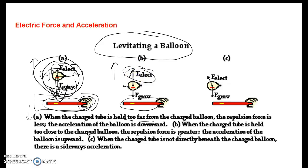When the tube is held off to the corner, as in situation C, we get an angle and we can use trigonometry to find the x and y components of the forces. The acceleration could be sideways, upward, or downward — all depending on how the forces balance out.